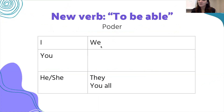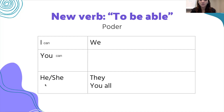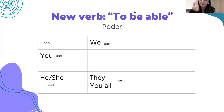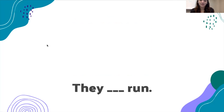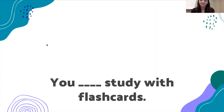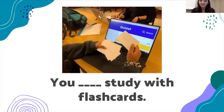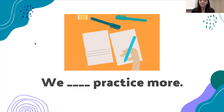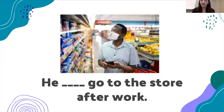Next, we are learning a new verb. This verb literally translates to 'to be able,' which in Portuguese is 'ser capaz,' but in English you will always hear 'can.' So: 'I can,' 'you can,' 'he or she can' — notice we do not add an 's.' This verb is a little irregular. 'We can,' 'they can' — everything is the same. Some examples: 'I can read,' 'they can run,' 'you can study with flashcards,' 'we can practice more,' 'he can go to the store after work.'